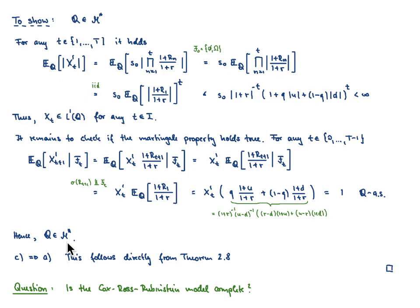Let us now look at C implies A — but that is simple. We have an equivalent martingale measure, and by Theorem 2.8, the first fundamental theorem of asset prices, we know that this gives rise to an arbitrage-free financial market model. This concludes the proof of Theorem 3.1.